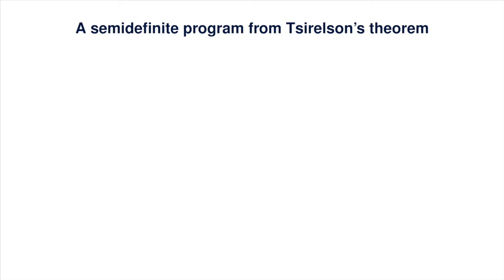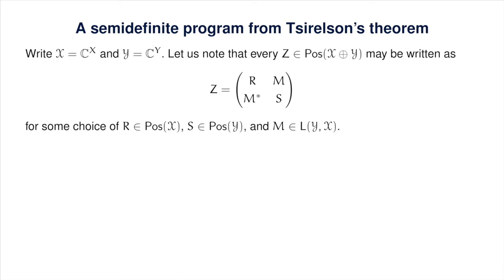To formally define a semi-definite program for the entangled bias of XOR games, let us define a few useful objects. We use the scripted letters X and Y to denote the complex Euclidean spaces indexed by the question sets X and Y, and we'll use that notation for the entire lecture. Note that every positive semi-definite operator Z acting on the direct sum of X and Y can be written as a 2-by-2 block matrix, exactly the form of the block matrices that appeared on the previous slide.